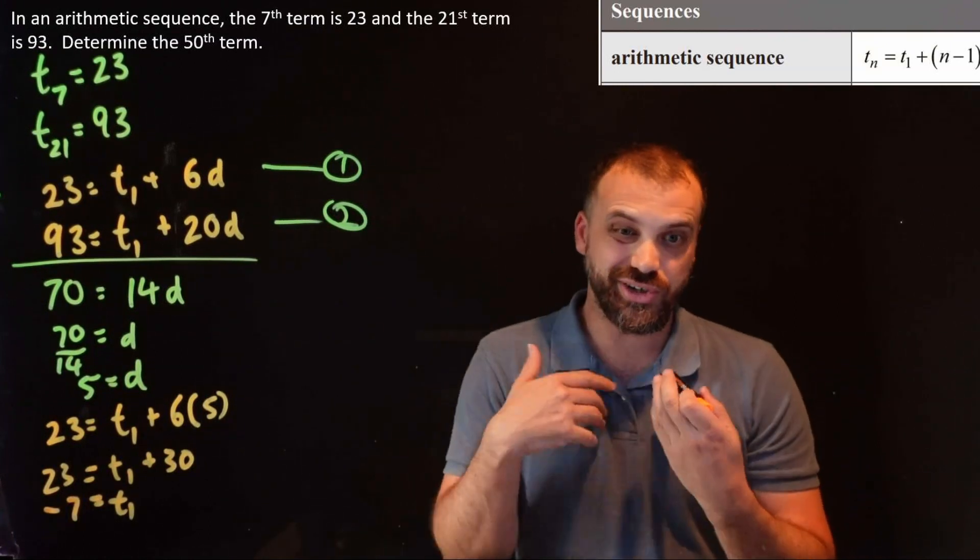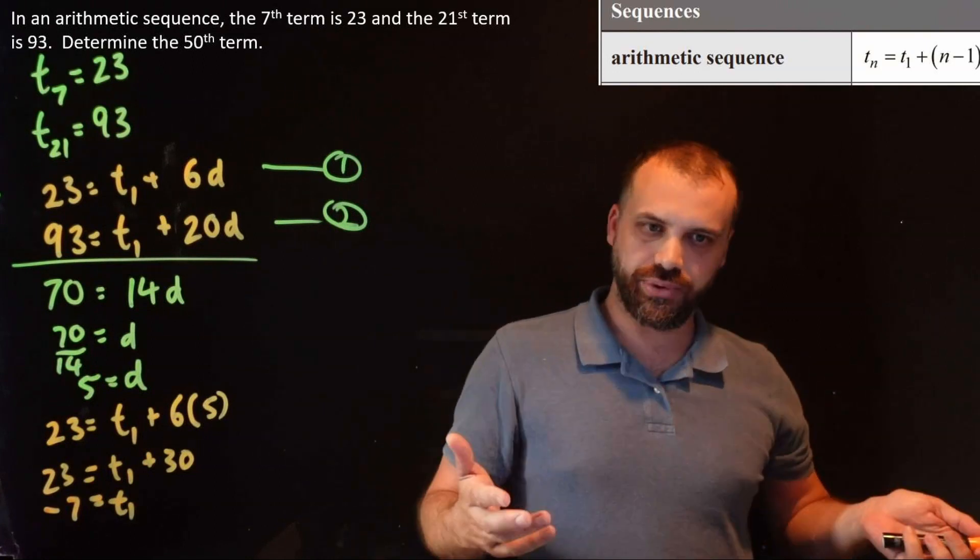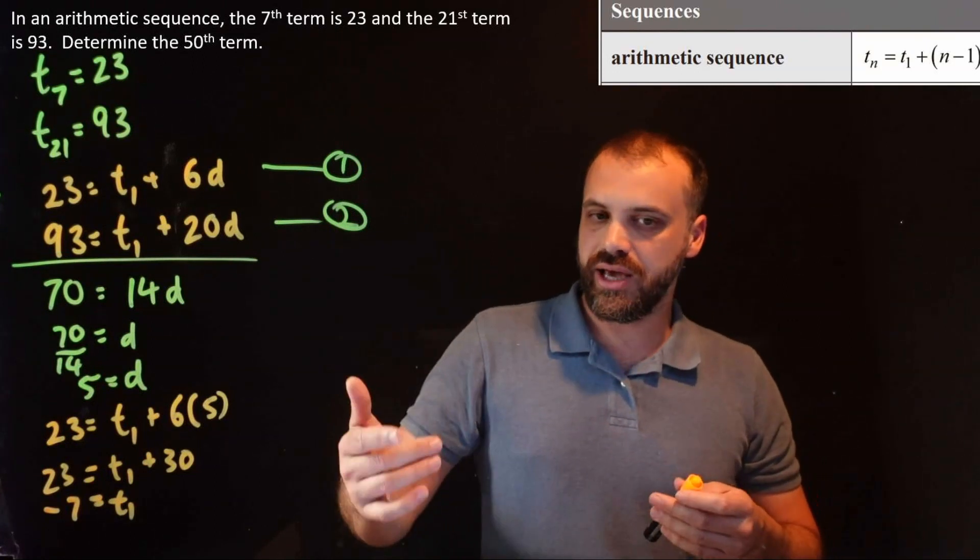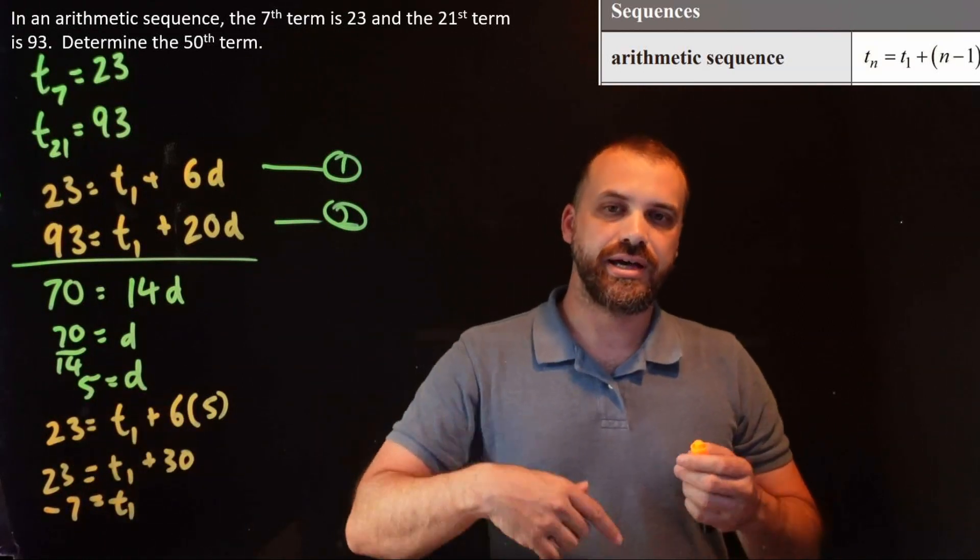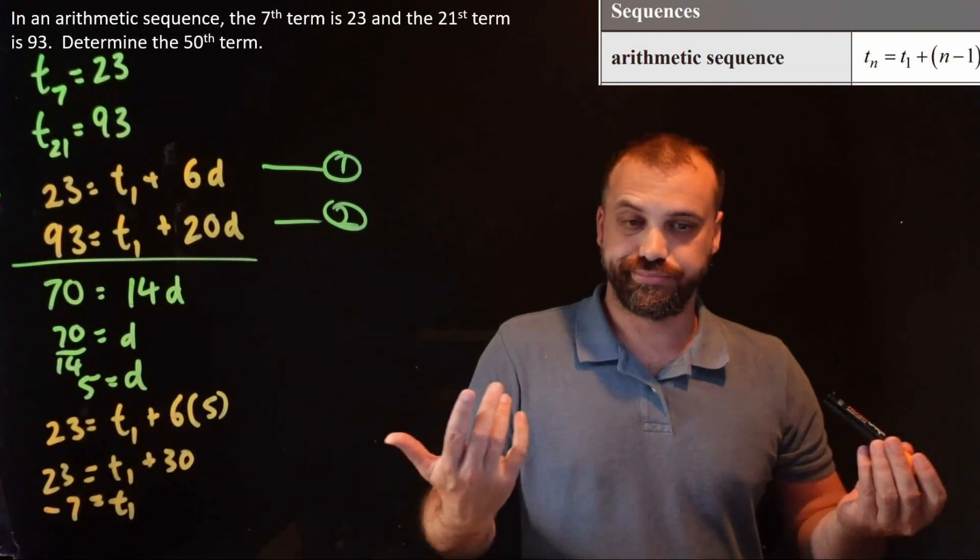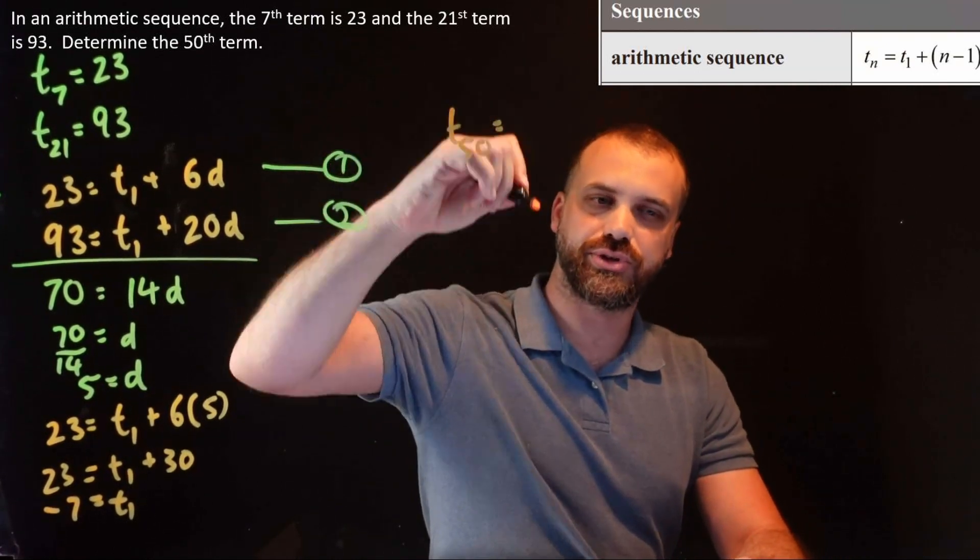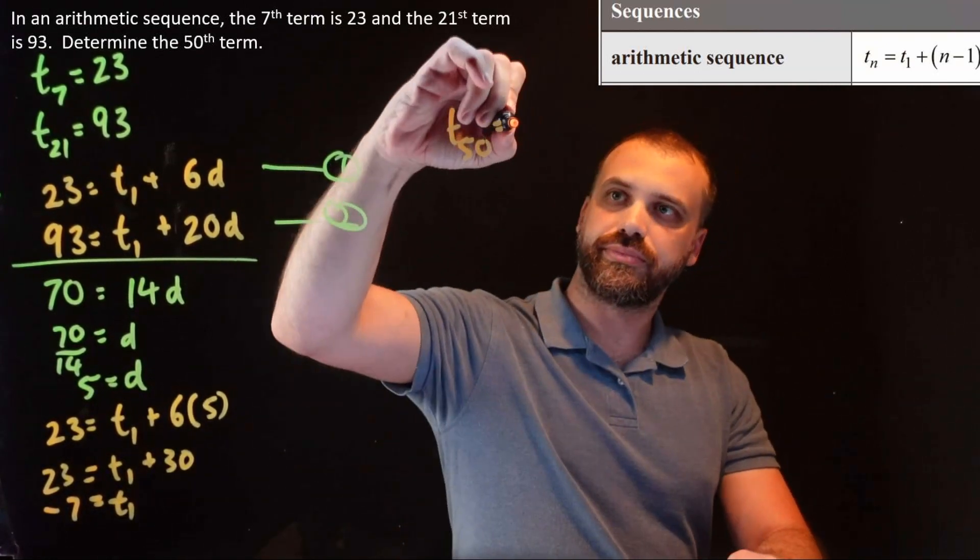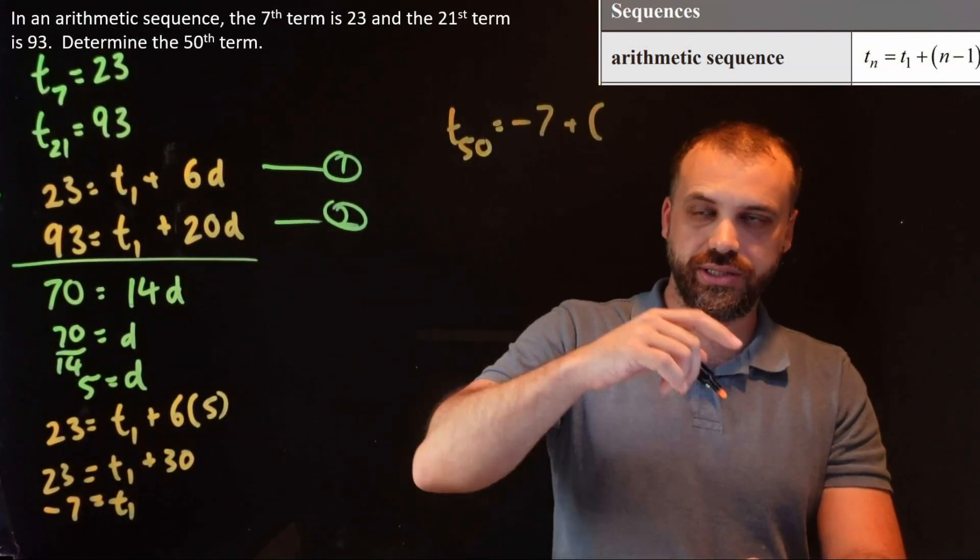Now, really everything I've shown you here, that's kind of the end of the question because the next bit is so simple. It's stuff that we've done in the past because it says now that we know the first term and now that we know the common difference, let's find the 50th term. So the 50th term is equal to the first term, negative 7, plus n minus 1.